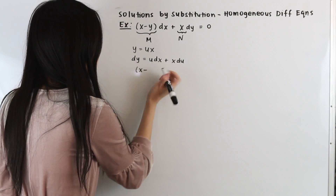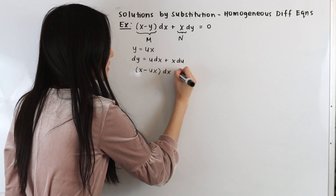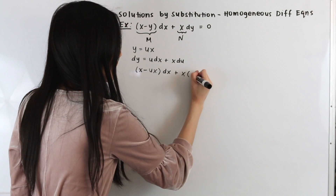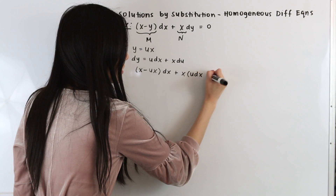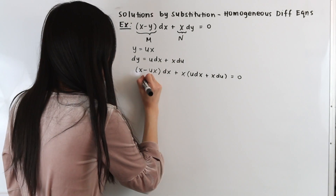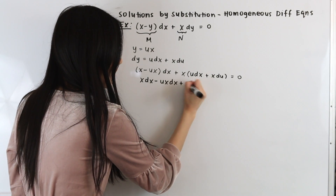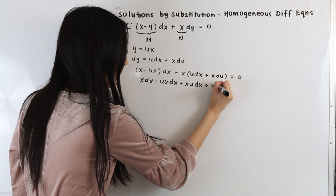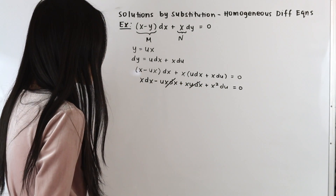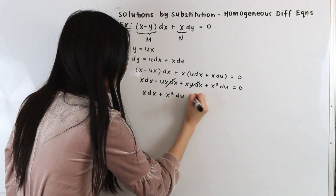Plugging the substitution into our differential equation: x minus ux, multiplied by dx, plus x times (u dx plus x du), equals zero. Expanding gives x dx minus ux dx plus xu dx plus x squared du equals zero. The negative ux dx and plus xu dx terms cancel, leaving x dx plus x squared du equals zero.